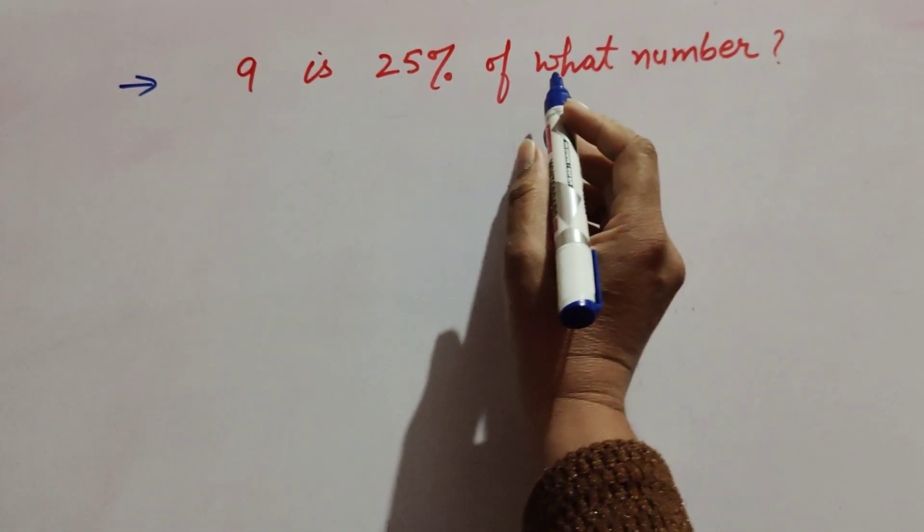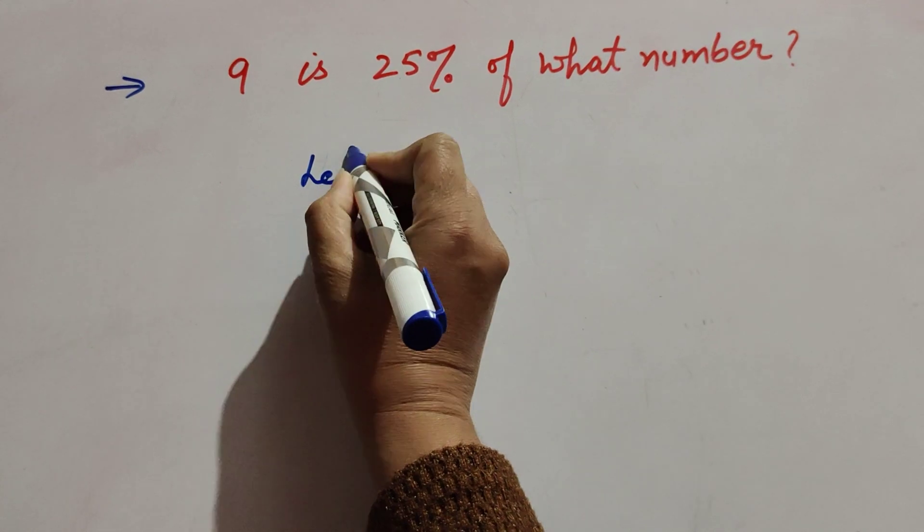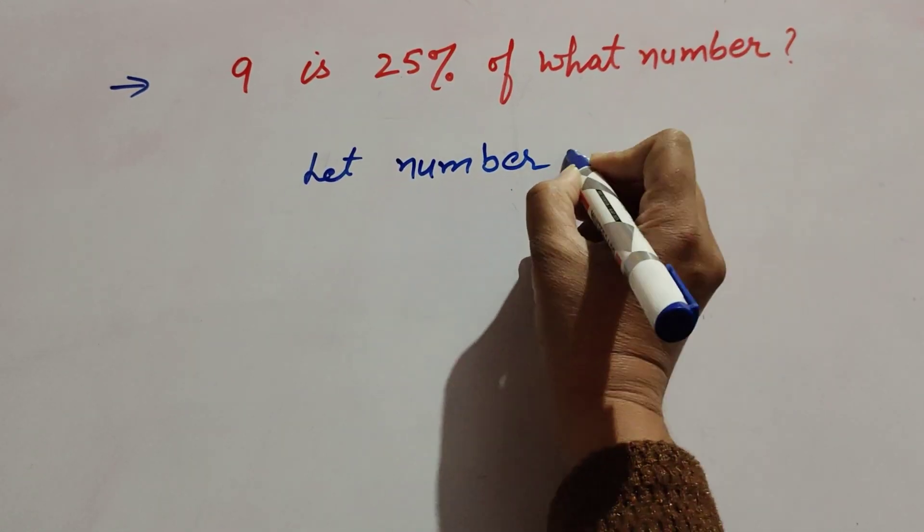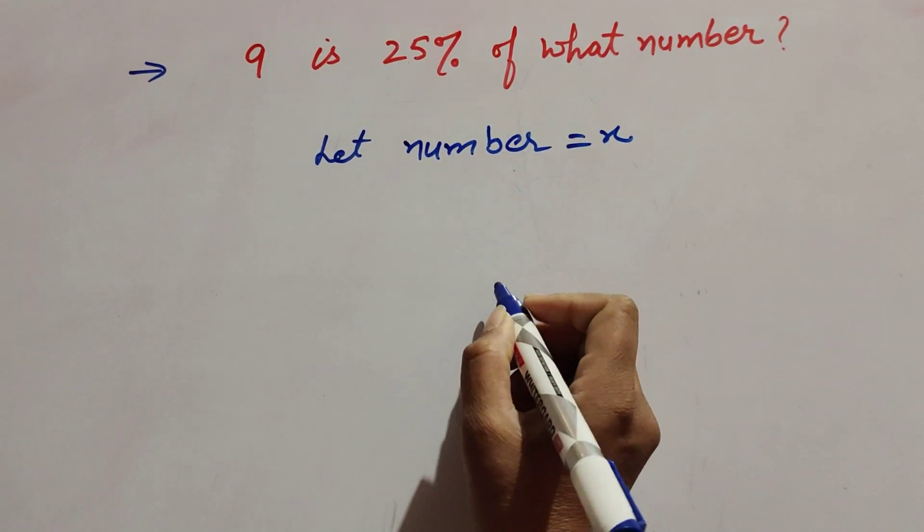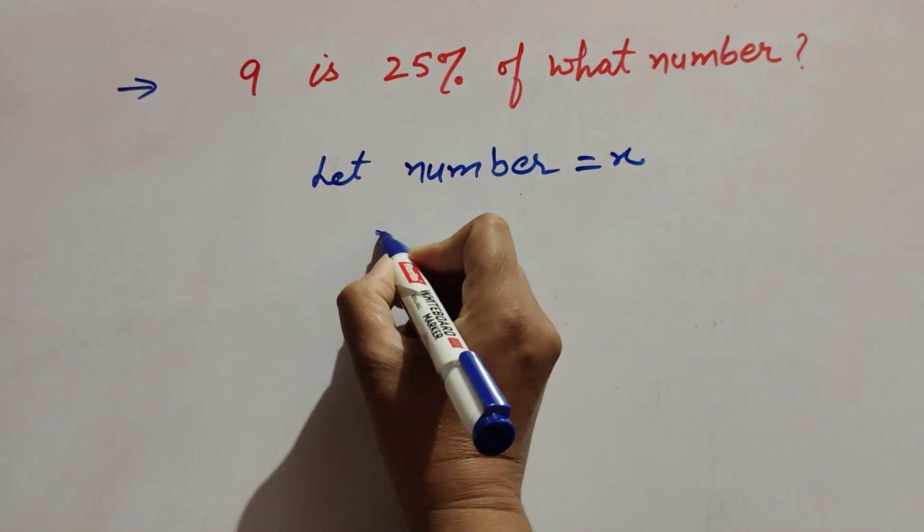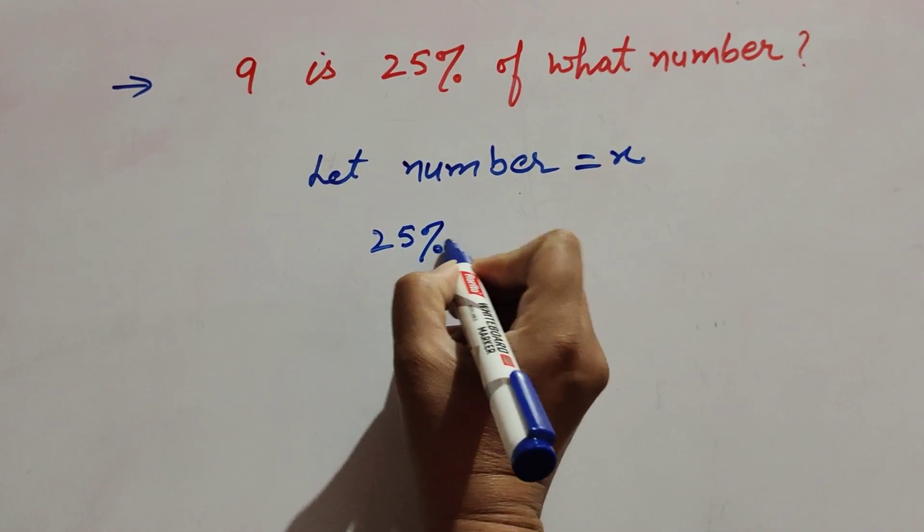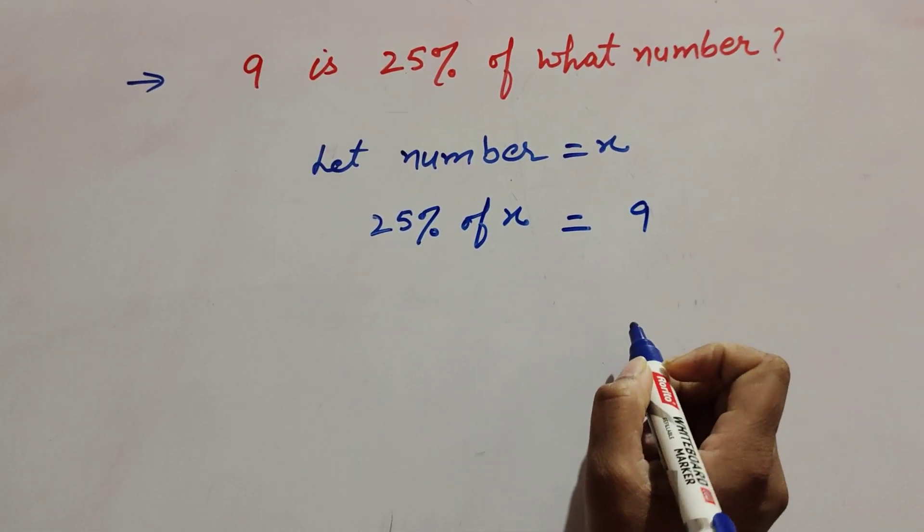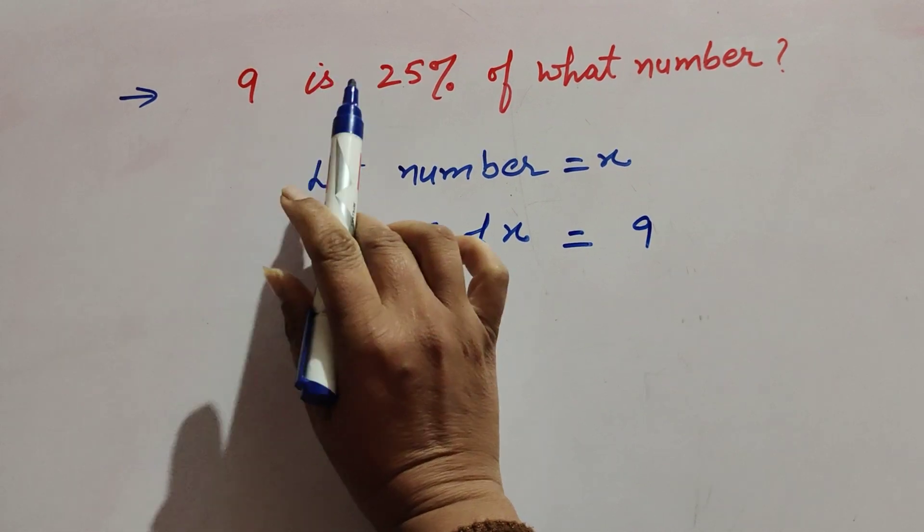25 percent is given and equals 9. So let the number we suppose be x. And 25 percent of x is equal to 9. This is given in the question.